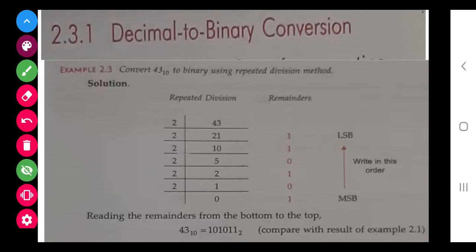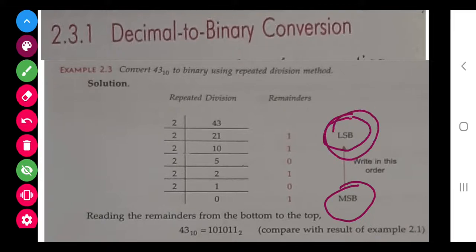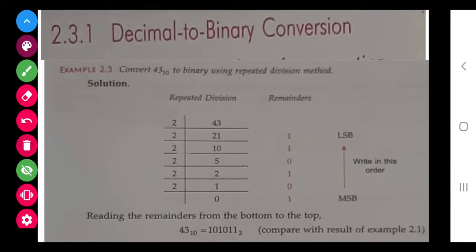We read from the most significant value to the least significant value — that is from bottom to top. So the answer reading the remainders from bottom to top is 1 0 1 0 1 1. Always read from bottom to top.